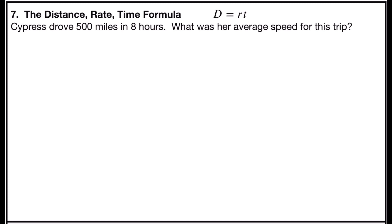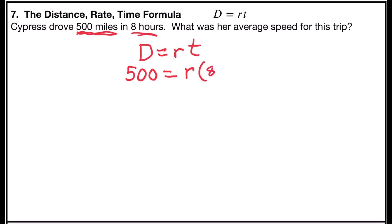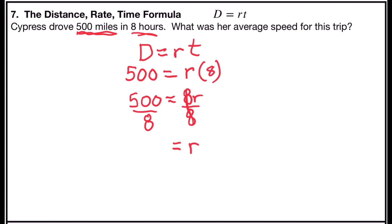Problem number seven is the distance rate time formula. It says D equals RT. The problem says Cypress drove 500 miles in eight hours. What was her average speed for this trip? D stands for distance, R is the rate, and T is the time. Cypress drove 500 miles, so we substitute 500 for D. The rate is what we're looking for, and the time is 8 hours. So 500 equals R times 8, which is 8R. We'll divide both sides by 8 — 8 divided by 8 cancels out — and 500 divided by 8 is 62.5. The average speed for Cypress's trip was 62.5 miles per hour.